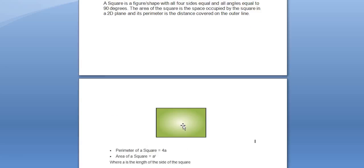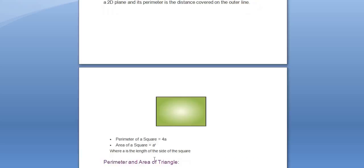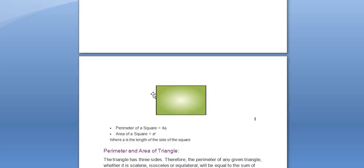The area of the square is basically the space occupied by the square in a 2D plane and the perimeter is the distance covered on the outer line, which is given by 4A. Area is given by A square, where A is the length of the side of the square.